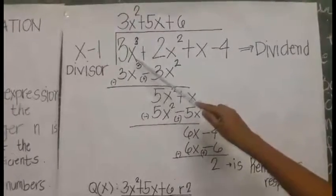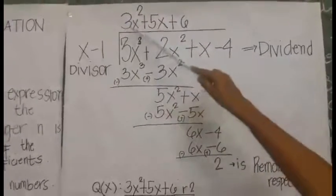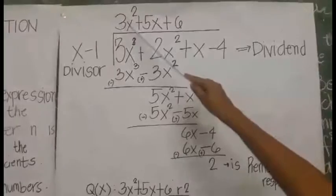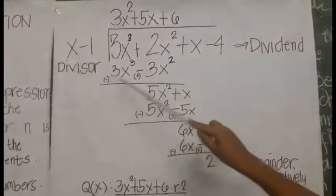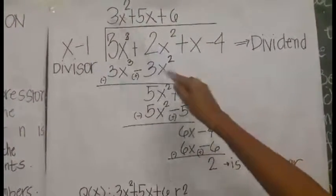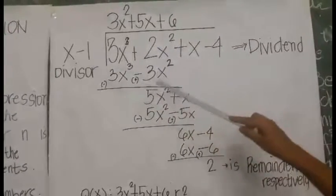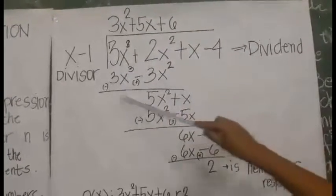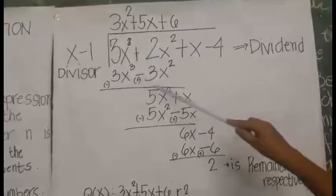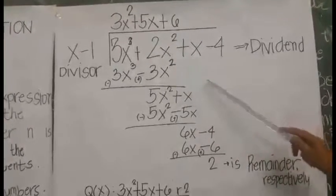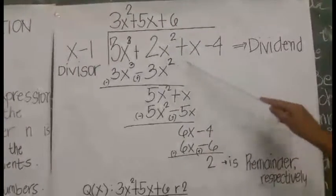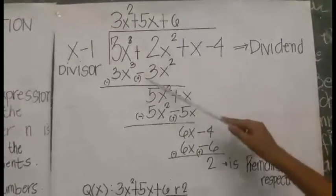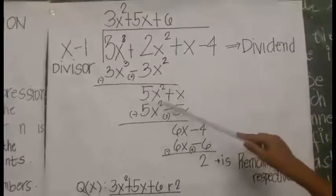3x cubed divided by x equals 3x squared. 3x squared times x equals 3x cubed. 3x squared times negative 1 equals negative 3x squared. Change the sign of the subtrahend and proceed to addition. 2x squared plus 3x squared equals 5x squared.